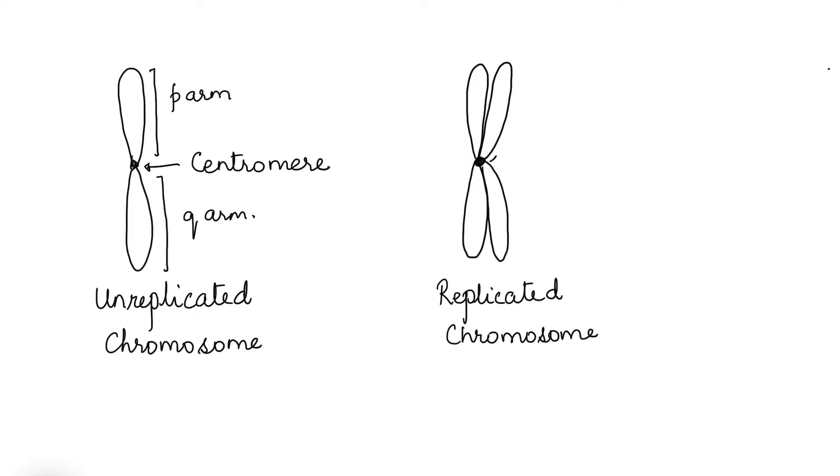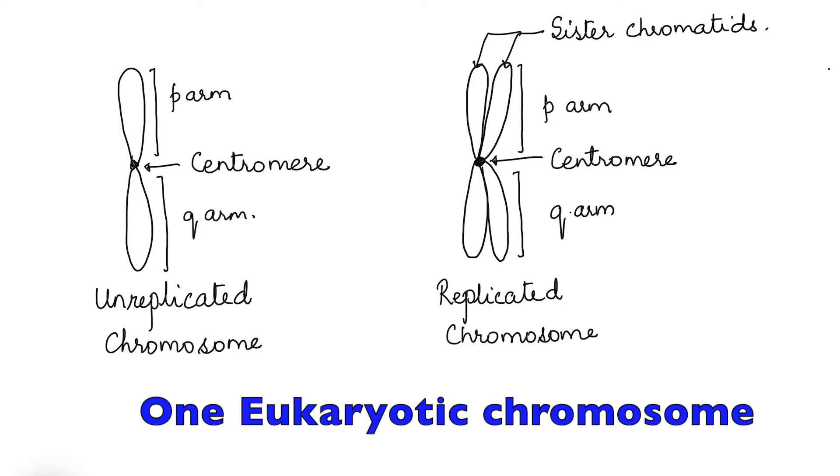Here I am labeling the centromere and the arms. The two strands that are connected by a centromere are each one chromatid. Thus there are two chromatids. These are called sister chromatids since they are connected by one centromere. This is one eukaryotic chromosome.